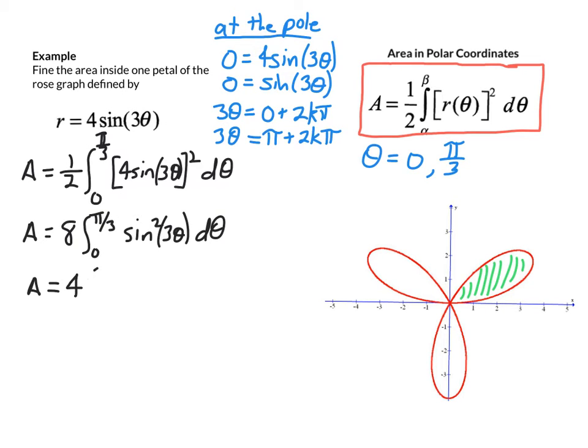This would be 4 times the integral of 1 minus the cosine, and we double the angle, so of 6 theta d theta. And that will allow us to get the antiderivative. Don't forget that power reduction formula any time you have a sine squared or a cosine squared function.